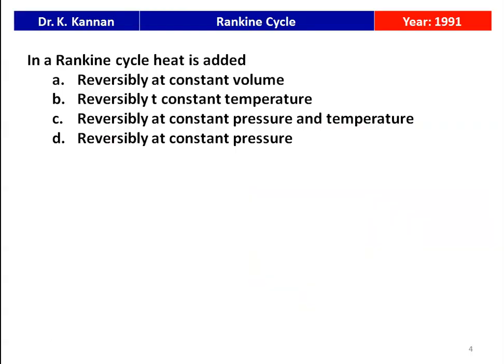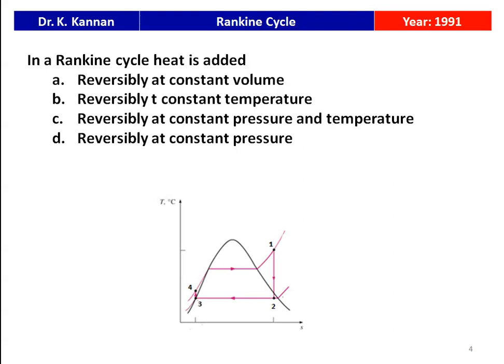The first question from the 1991 question paper: in a Rankine cycle, heat is added — four options are given: reversibly at constant volume, reversibly at constant temperature, reversibly at constant pressure and temperature, reversibly at constant pressure. In the simple Rankine cycle, 1 to 2 is isentropic expansion in the turbine, 2 to 3 is heat rejection in the condenser, 3 to 4 is compression in the pump, and 4 to 1 is heat addition. The heat addition process is constant pressure heat addition. So the answer is: heat is added reversibly at constant pressure.